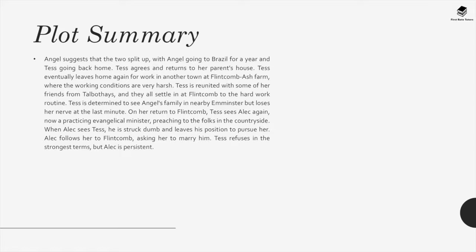Tess agrees and returns to her parents' house, then leaves again for work at Flintcomb Ash Farm, where conditions are very harsh. She is reunited with friends from Talbothays and they settle into the hard work routine. Tess is determined to visit Angel's family in nearby Eminster but loses her nerve at the last minute. On her return to Flintcomb, she sees Alec again, now a practicing evangelical minister preaching in the countryside. When Alec sees Tess, he leaves his position to pursue her, following her to Flintcomb and asking her to marry him.